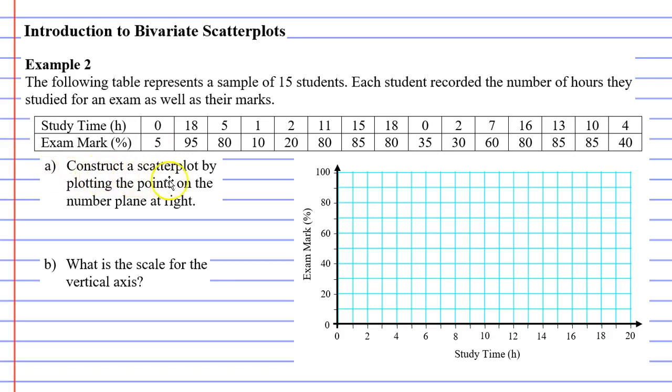For question A, construct a scatterplot by plotting the points on the number plane at right. We'll do one column at a time starting with the first column. Zero hours lines up with an exam mark of 5%, we'll put the point here. Looking at the next column, 18 hours lines up with an exam mark of 95%.